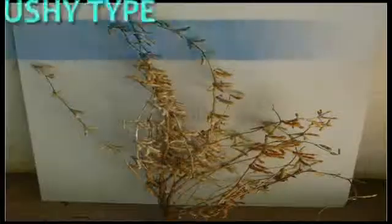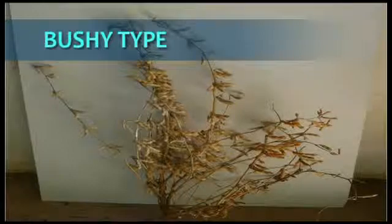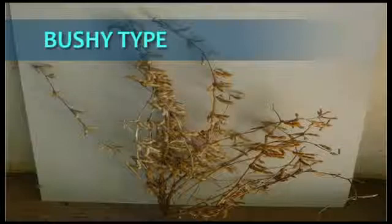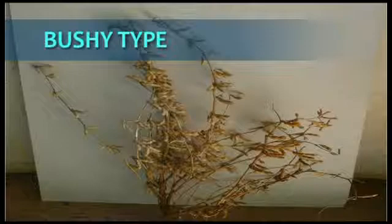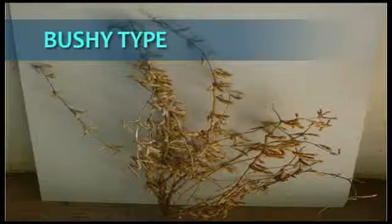Bushy type cultivars usually have at least three side branches on the main stem. These branches have their own pod-bearing nodes, which will increase the number of pods per plant. They have the ability to compensate for a low plant population density by producing more side branches on the main stem.